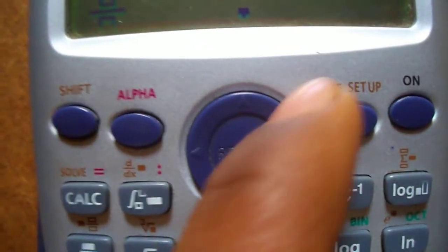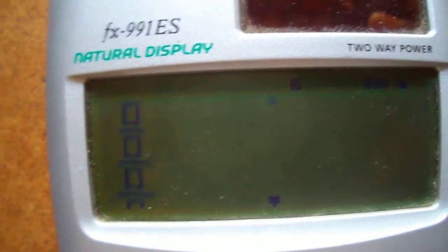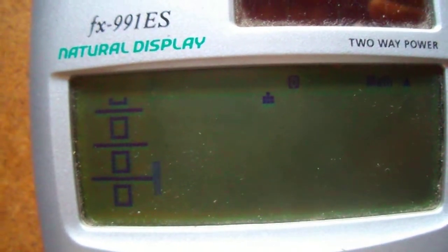Then using the right arrow button on this, right arrow button, just come down of this fraction and come out of it.